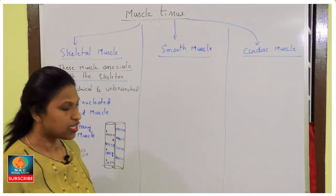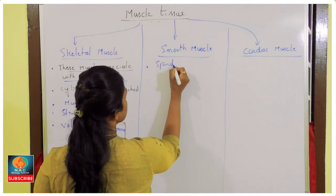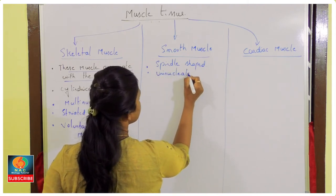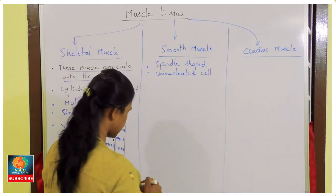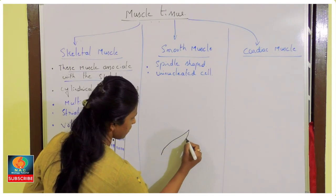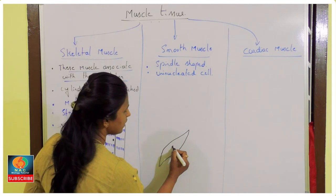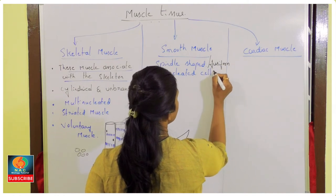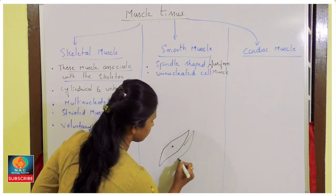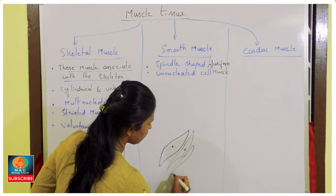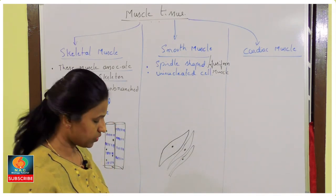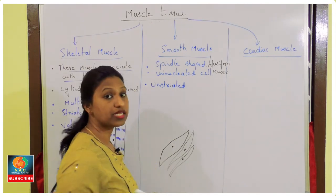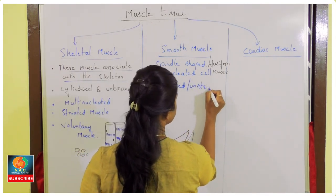Smooth muscles are spindle-shaped — pointed at both ends — and uninucleated. This shape is also known as fusiform. Unlike skeletal muscles, smooth muscles show no alternating dark and light bands, so they are called unstriated or unstriped muscles.